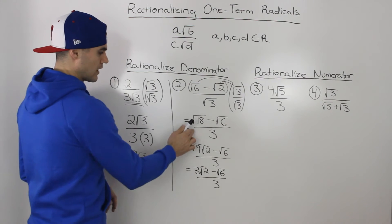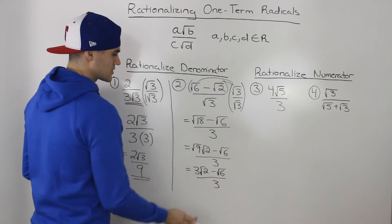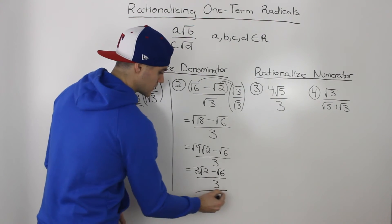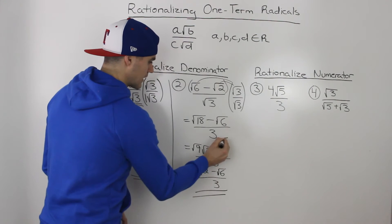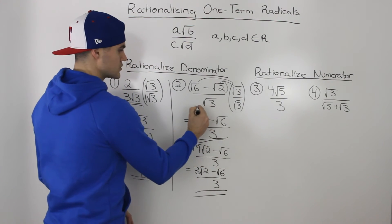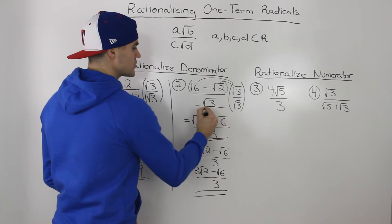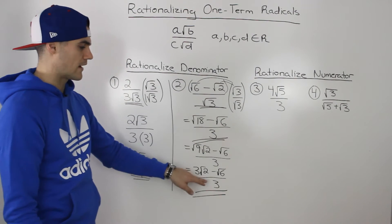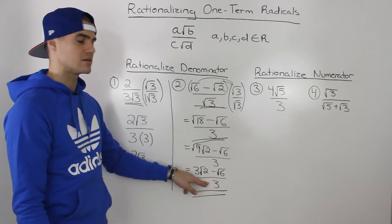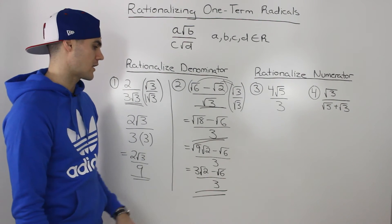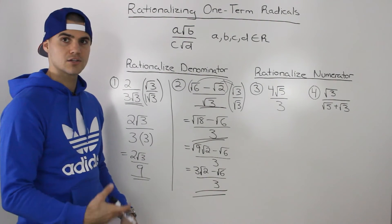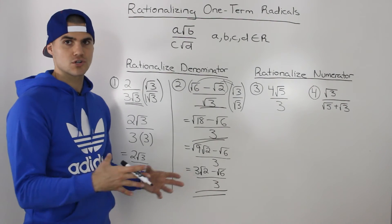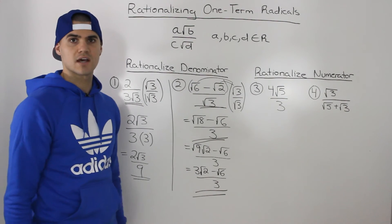Either form — with root 18 or simplified to 3 root 2 — both expressions are equivalent to the original. But notice how there's no radical in the denominator now. Check your answer by plugging both into the calculator and making sure you get the same decimal amount.